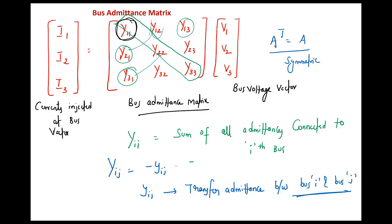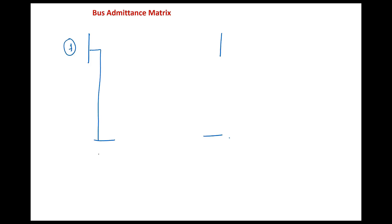For a four-bus system: Y11, Y22, Y33, Y44 all exist (diagonal). Y12 and Y21 exist (line between 1–2), Y14 and Y41 exist (line between 1–4), Y34 and Y43 exist (line between 3–4), Y24 and Y42 exist (line between 2–4). Y13, Y31, Y23, Y32 are all zero since no lines connect those bus pairs.